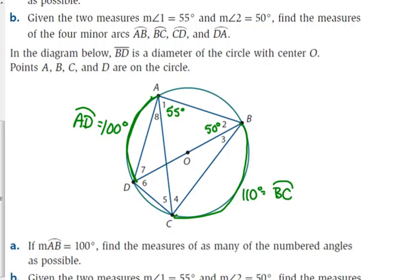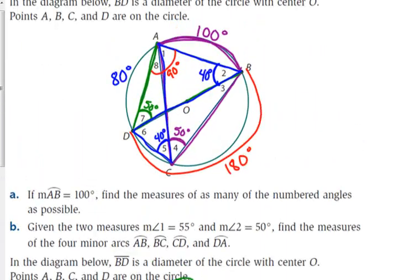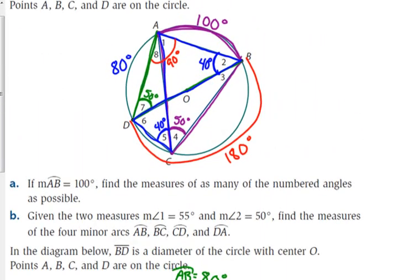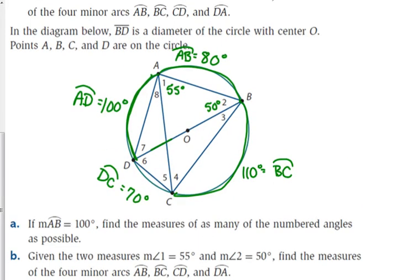So if AD is 100 degrees, DB is the diameter, so that means AB is 80 degrees. And vice versa, on the other side, the lower half, if BC is 110 degrees, then we're left with 70 degrees for DC. So it's kind of weird. With just those two pieces of information, we are able to figure out all of that for that circle.